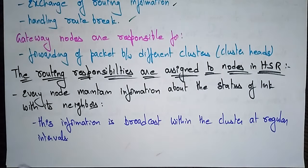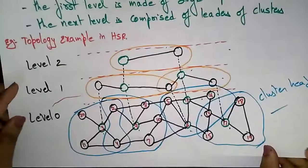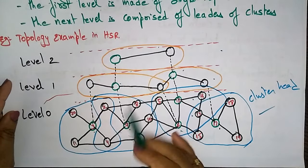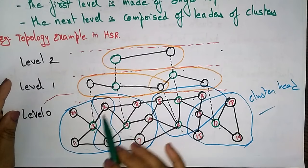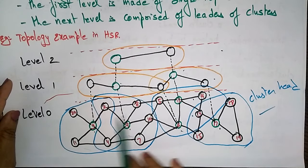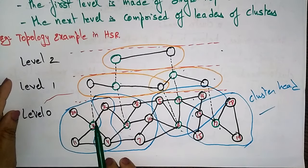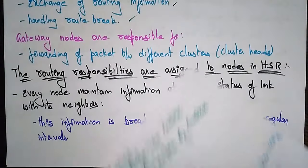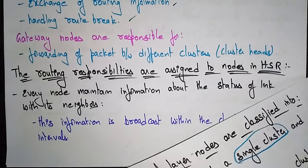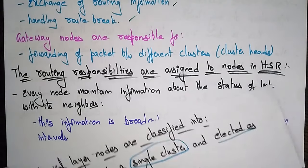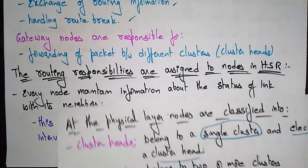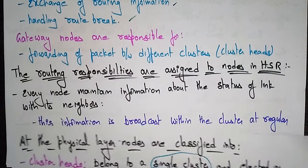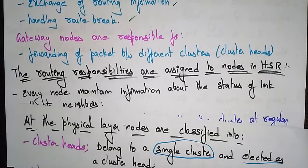The main difference in this hierarchical approach is that for each circuit there is one cluster. Those clusters maintain neighboring node information. Whenever there is a route — handling a route break or exchanging routing information, scheduling of packets — every task can be done by the cluster heads.